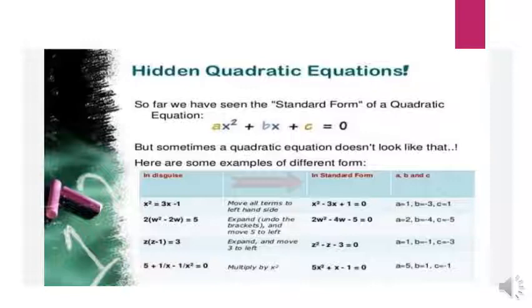Example 2: x² - 2w = 5. This is a quadratic equation in variable w.